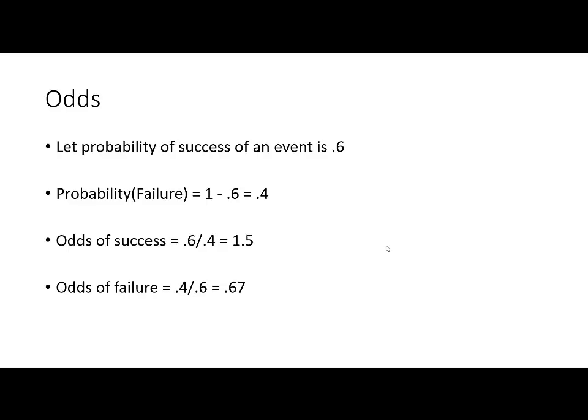So what are the odds of failure? Odds of failure equals the probability of failure divided by the probability of success — it's the reciprocal of odds of success. 0.4 divided by 0.6 equals 0.67. That's how we define the odds of success and odds of failure.